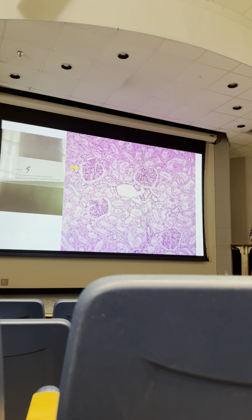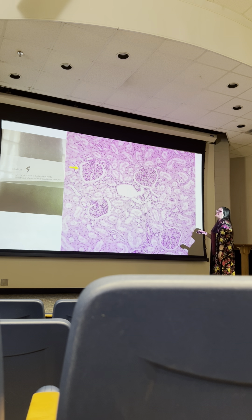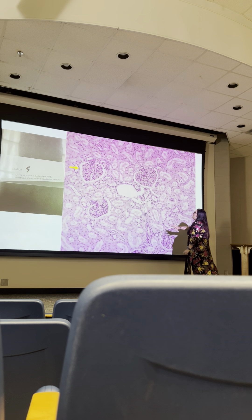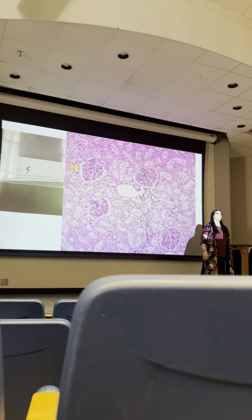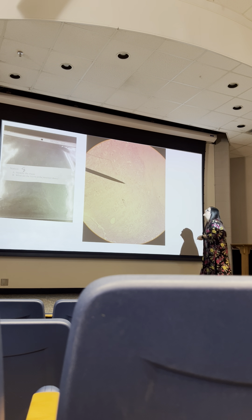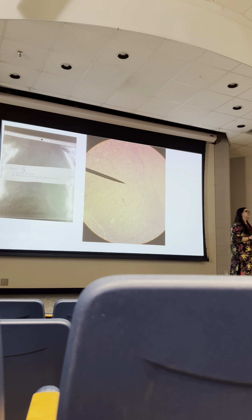Another practice image: the structure pointed to is Bowman's capsule. If you circle the entire structure it is the renal corpuscle. The epithelium of the glomerulus is simple squamous for filtration. The epithelium everywhere else in the tubules is simple cuboidal for absorption and secretion.